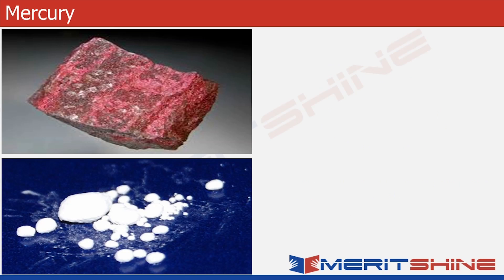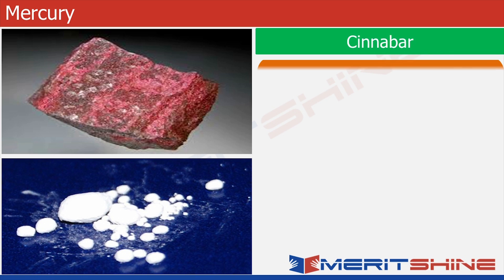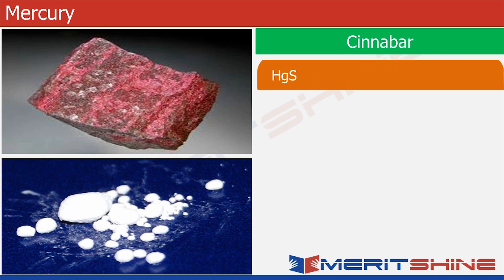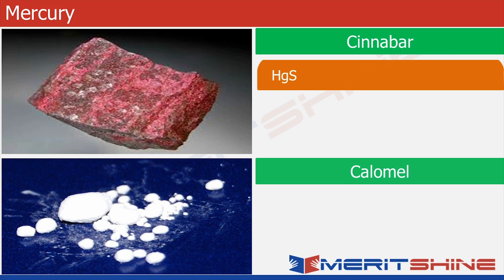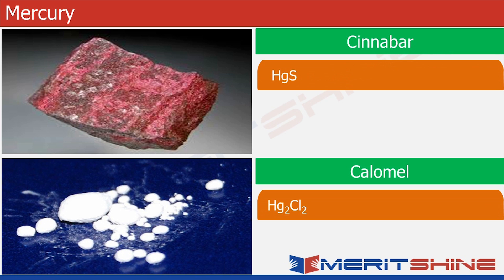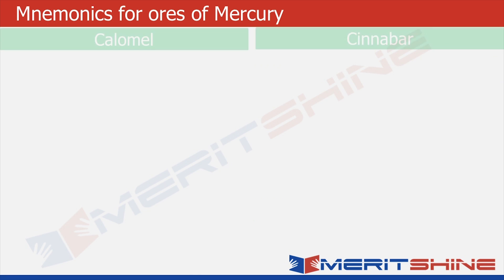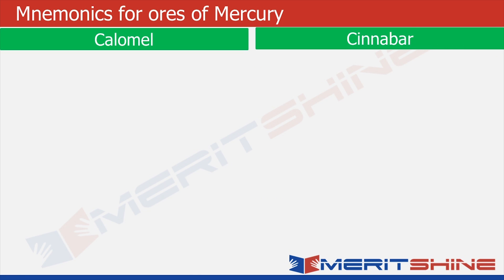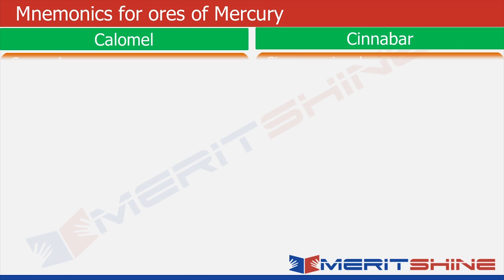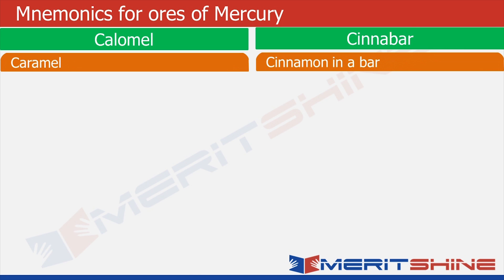We move to mercury. Cinnabar is the sulfide of mercury and calomel is the chloride of mercury. Let us put them down in our green boxes. Now it's time to fill the orange boxes.